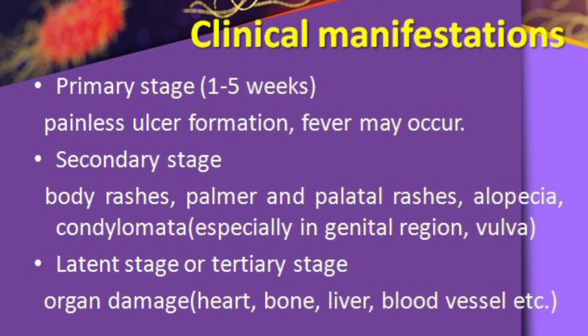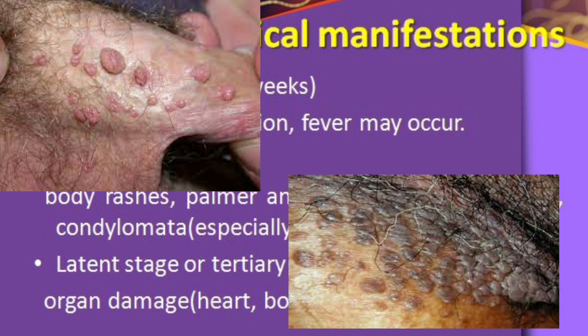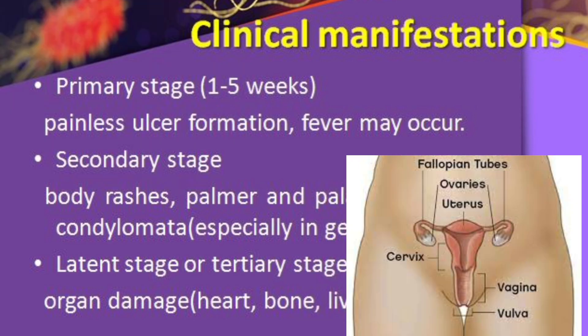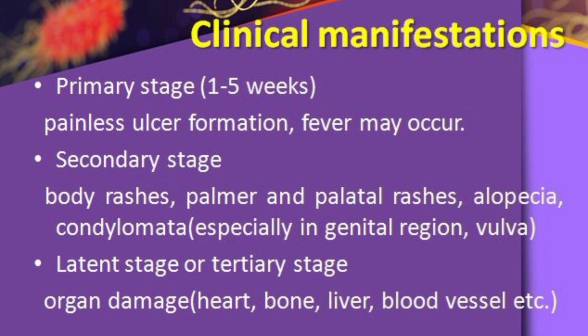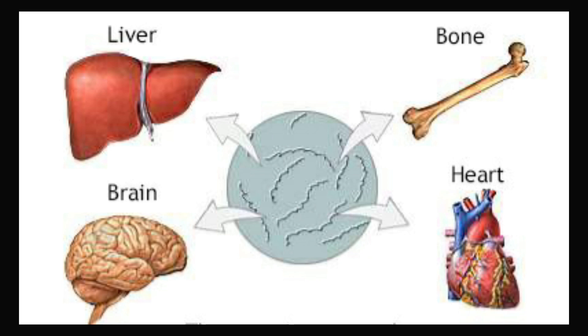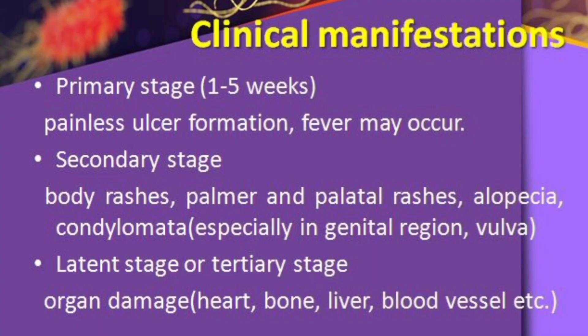Condylomata appear in the genital region — for males and in females on the vulva including labia majora, labia minora, and clitoris. In the latent or tertiary stage, organ damage occurs — heart, bone, liver, blood vessels — any organ may be affected.